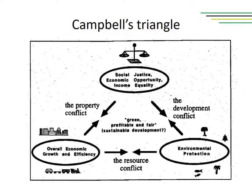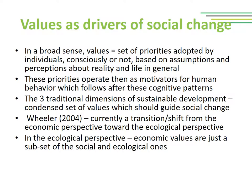It is utopic, one author argues, to think that we can balance these three dimensions. It is easier to think about sustainable development as being socially constructed through a process of conflict and negotiation. When we are talking about sustainable development, we are also talking about values and about how values act as drivers of social change. In a very broad sense, values are sets of priorities adopted by individuals or organizations, consciously or not, based on assumptions and perceptions about reality and life in general. These priorities operate then as motivators for human behavior. The three traditional dimensions of sustainable development can be viewed as a condensed set of values which should guide social change.